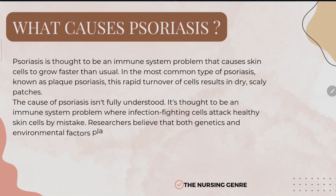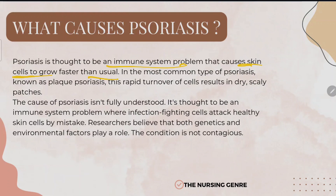What causes psoriasis? It is thought to be an immune system problem that causes skin cells to grow faster than usual. In the most common type, known as plaque psoriasis, this rapid turnover of cells results in dry, scaly patches.